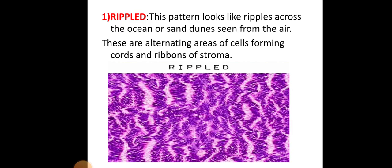The first pattern is the ripple pattern, where the pattern looks like ripples across the ocean or sand dunes seen from the air. These are alternating areas of cells forming cords and rivers within the stroma.